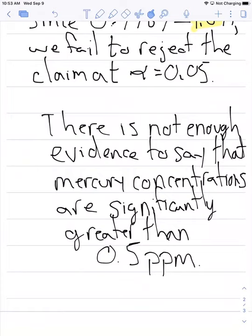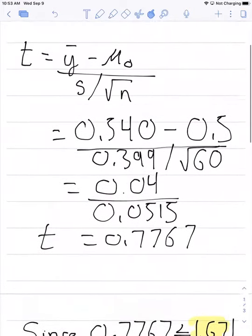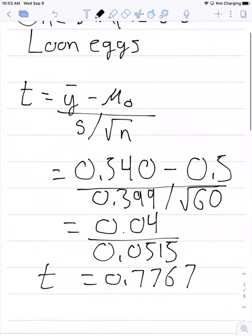And so that should give you some pause. You should be curious about that result. What that says is that we don't have enough evidence to say that mercury contents are greater than 0.5 parts per million. But remember, our sample mean was even greater than 0.5 parts per million. It was 0.54 parts per million.